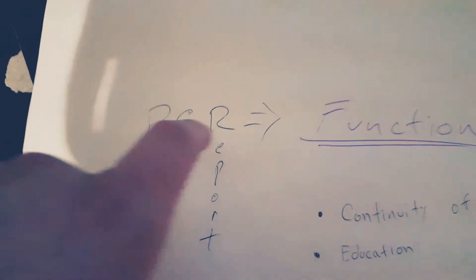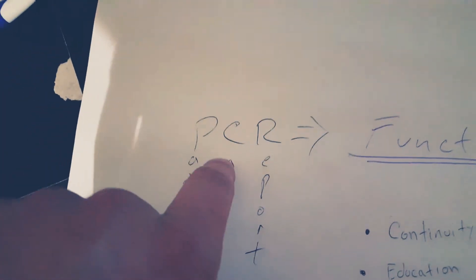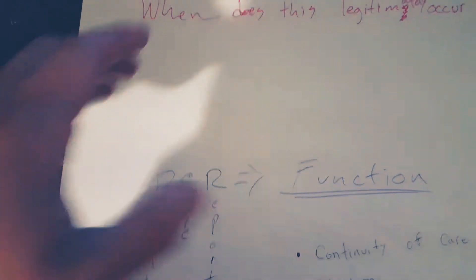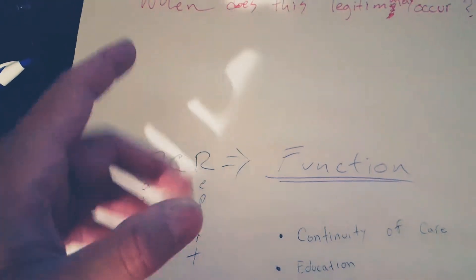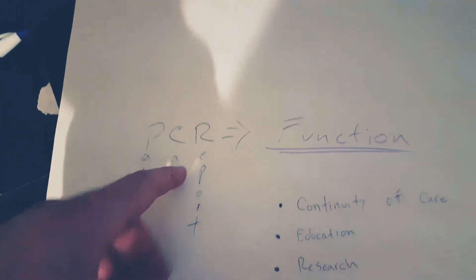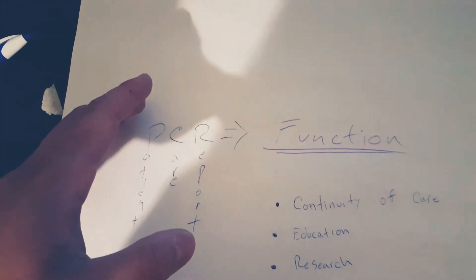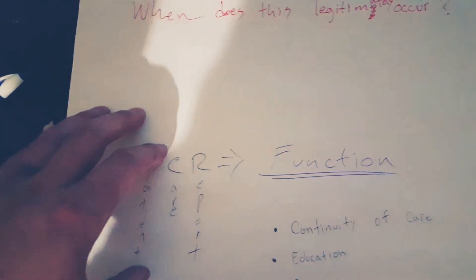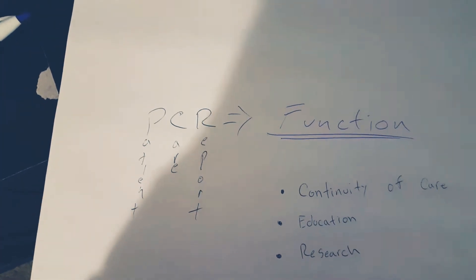Now your PCR, your patient care report—in case you don't know what this is—this is the form that you fill out that has all the patient's information. Nowadays, in some of the bigger companies, you'll see that on a tablet, so you won't always have the paper sheet. Some companies still have the sheet, but it's still called the patient care report.